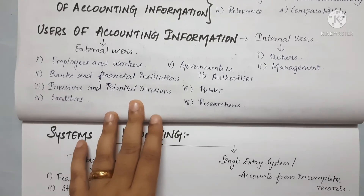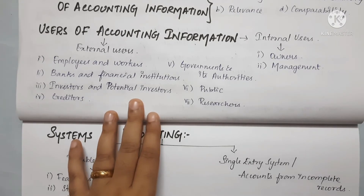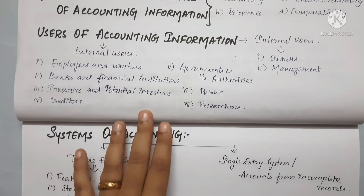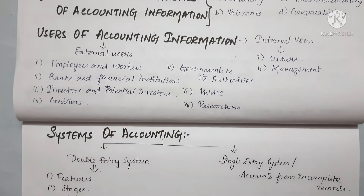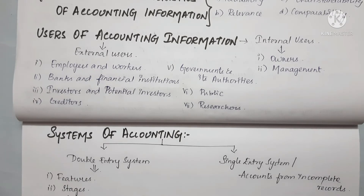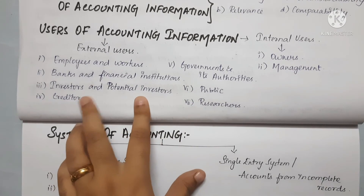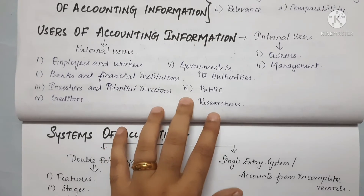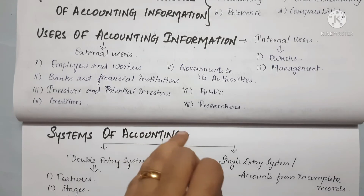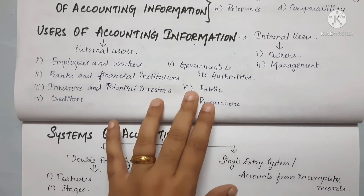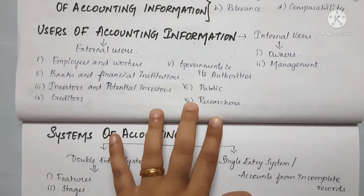Investors and potential investors want to know the earning capacity of enterprises and how safe their investment is. Creditors also use accounting information to assess whether they will be paid. These are the key external users including banks, financial institutions, investors, and creditors.